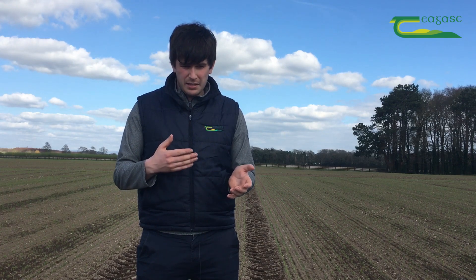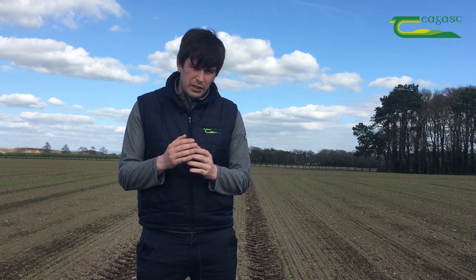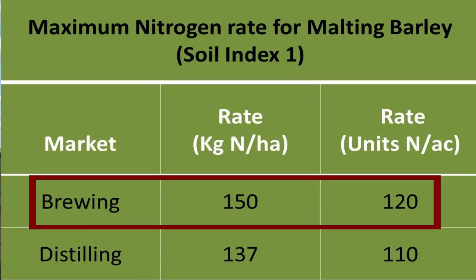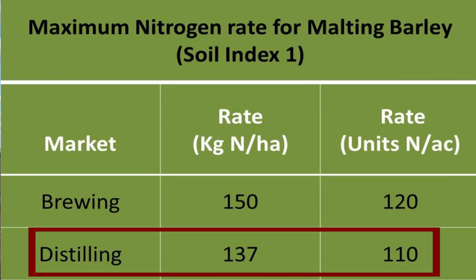To plan a nitrogen application program for your spring malting barley, we take in these three factors and look at our sowing date and where the crop is at. As an example, for a field that has been continuous spring malting barley for a long number of years, the rate of nitrogen would be about 120 units to the acre for brewing, and to meet distilling specification we cut that back to 110. Those are the guide application rates for that long-term tillage soil.